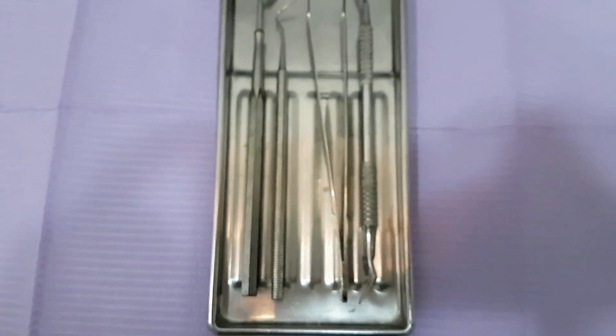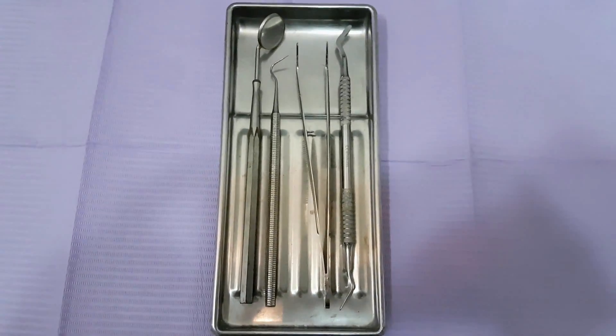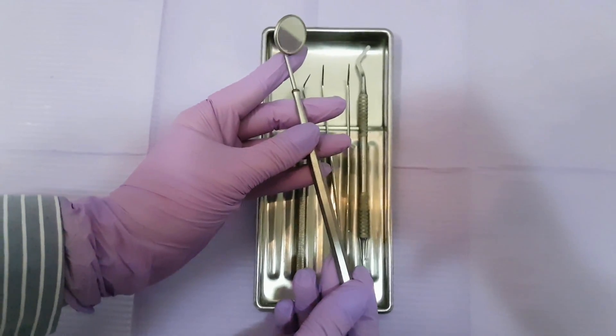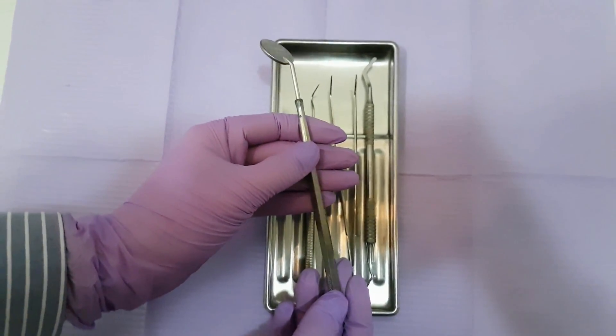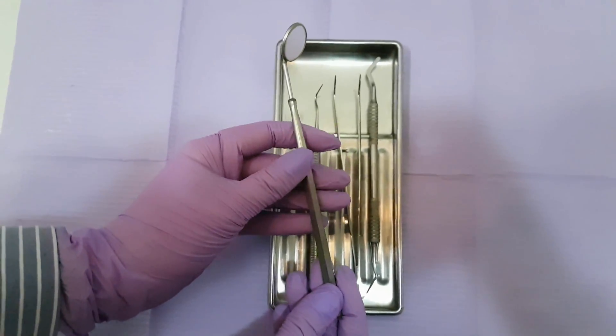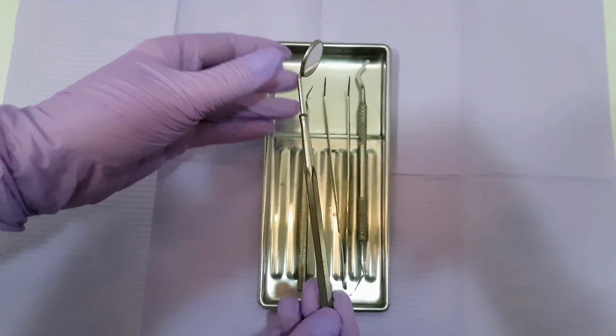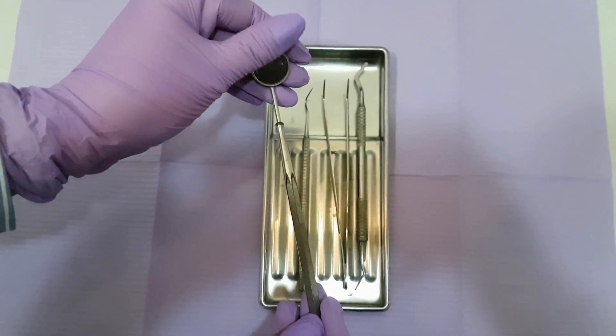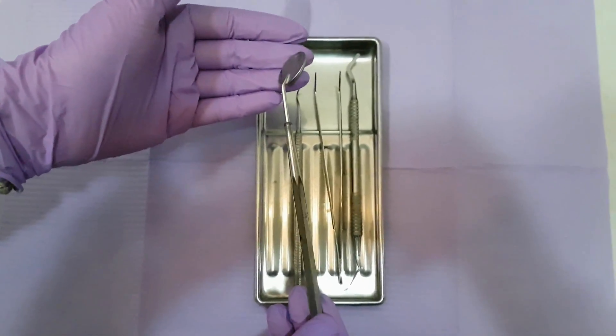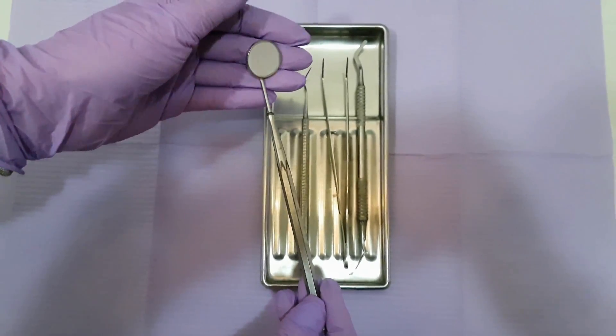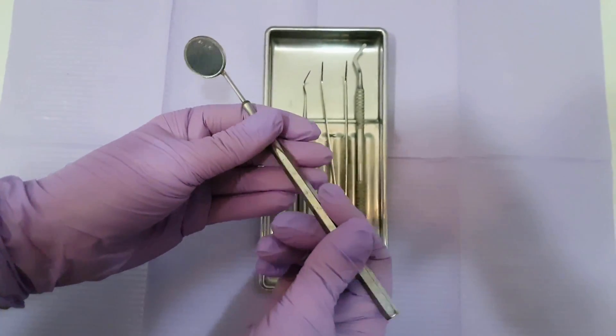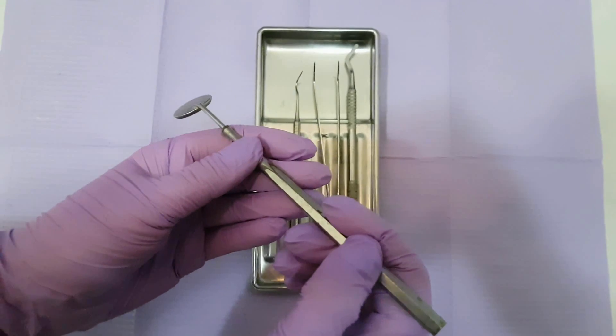First I would like to start with describing the dentist mirror. It has a handle and the working mirror part. This instrument has three basic uses: to retract soft tissues in a patient's mouth, to direct the light towards the tooth we want to work on, and to indirect view.